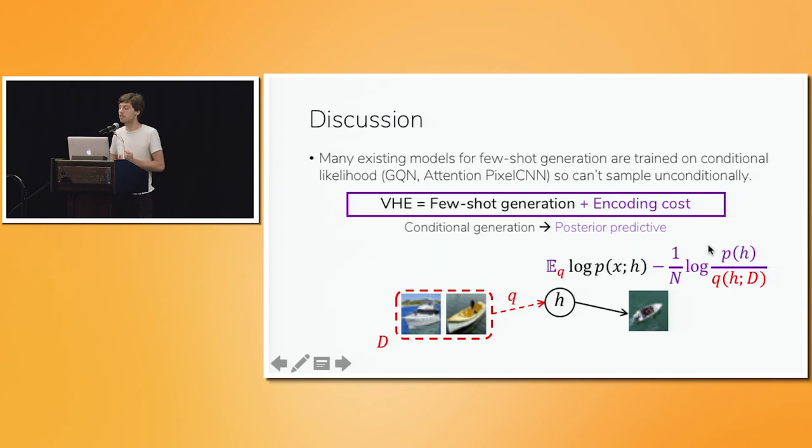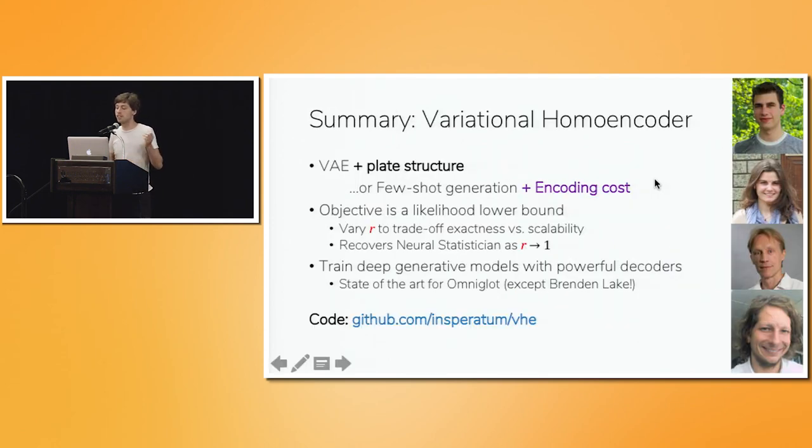And so under this view, a variational homoencoder is a strategy for turning few-shot generative models into variational Bayesian ones. We upgrade the conditional generation to a posterior predictive inference. And in doing so, we learn an unconditional model of our data at the same time. And so that's the variational homoencoder. You might think of it as taking a variational autoencoder and extending it to work on more richly structured graphical models. Or as taking a few-shot generation model and turning it into a Bayesian posterior predictive. The VHE objective is a lower bound on the likelihood of the complete data set. And by varying the support ratio, we can tighten this bound in exchange for tractability. And lastly, the VHE has the advantage that it can be used to train latent variable models with powerful likelihood functions like PixelCNNs. And we showed this with an Omniglot generative model that's state-of-the-art for deep learning.